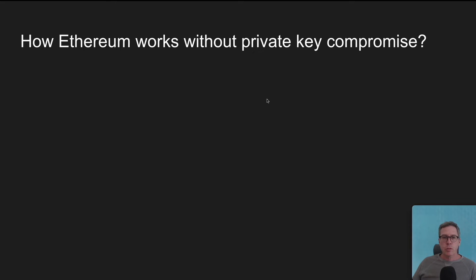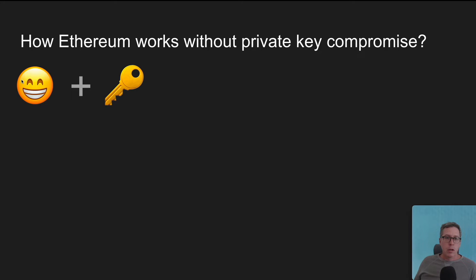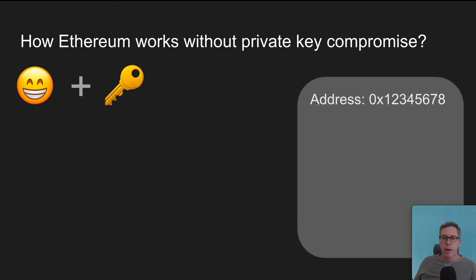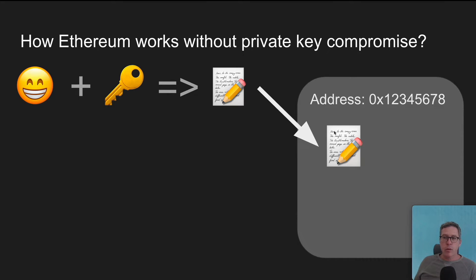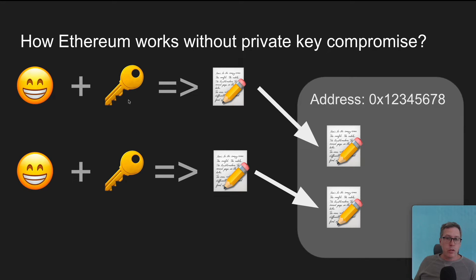Let's first explore how Ethereum works without a private key compromise in place. You have access to a private key or seed phrase, which we are using interchangeably, and that maps to an address on the Ethereum network. Using this private key, you can create a transaction and sign it and broadcast it to the network for inclusion. You can do this over and over again using the exact same key, creating more transactions against this account.